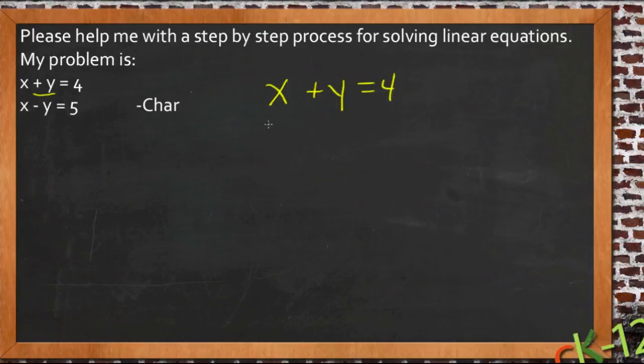x plus y equals 4, x minus y equals 5. We'll add straight down. We have two x's, x plus x is 2x. y minus y is nothing. 5 plus 4 is 9.